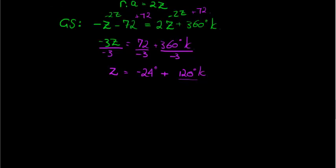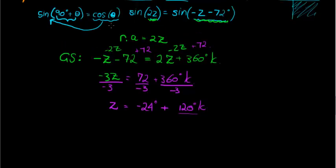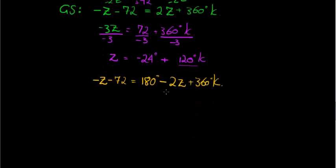It's not my only solution though. I've got another solution because I was working with sin. The second solution is -z - 72 is equal to 180° minus my reference angle, which in this case was -2z, plus 360k.